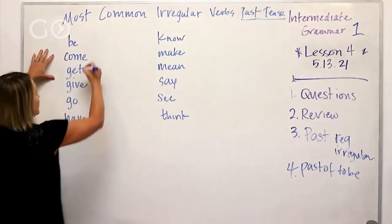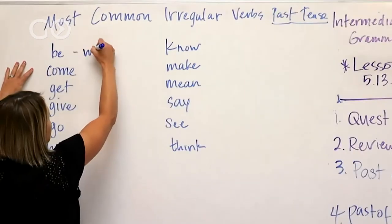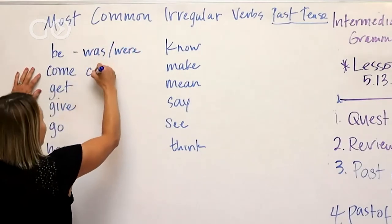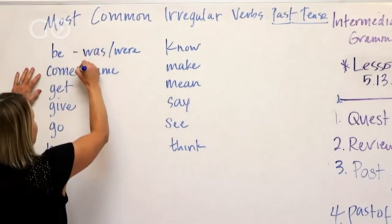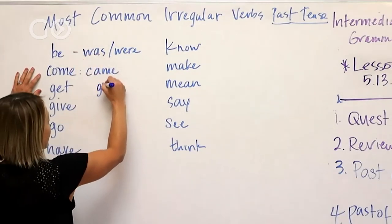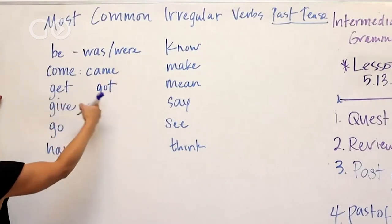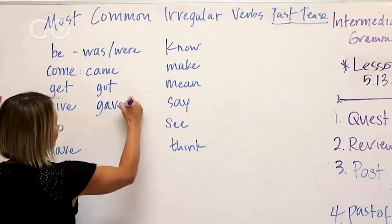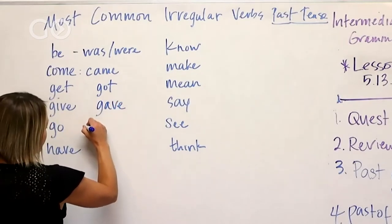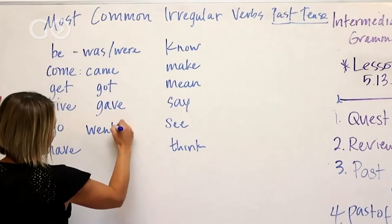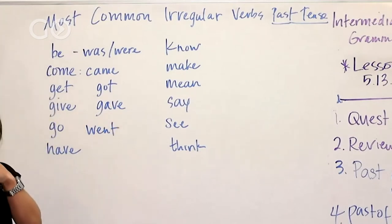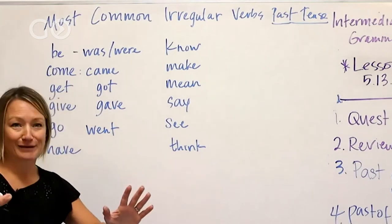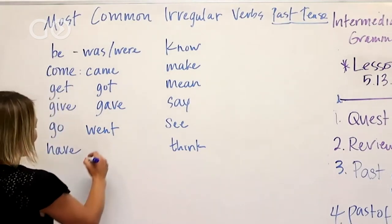So the past tense of 'to be' is — you guys already know this, we just did this — was, or were. 'Come' is 'came.' 'Get' in the past tense is 'got,' so it changes from E to O. 'Give' changes to 'gave.' 'Go' is 'went,' and they don't change in person — I went, you went, she went — so that's at least one nice thing about it.